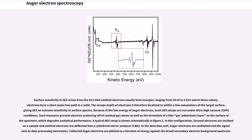Such measures prevent electron scattering off of residual gas atoms as well as the formation of a thin gas adsorbate layer on the surface of specimen, which degrades analytical performance. A typical AES setup is shown schematically in Figure 2.